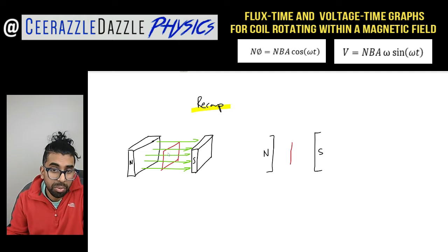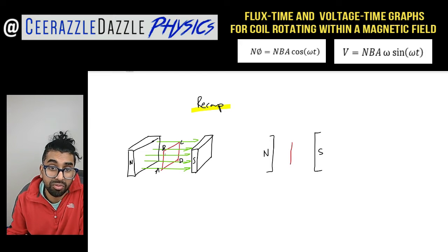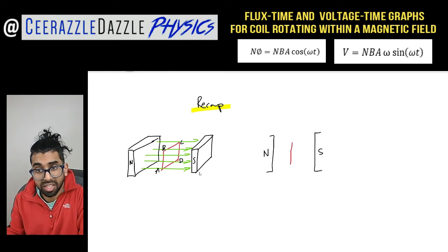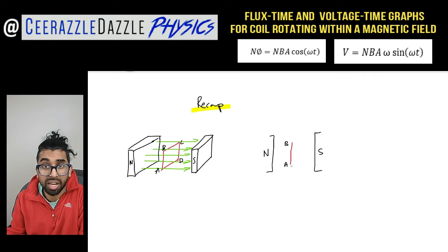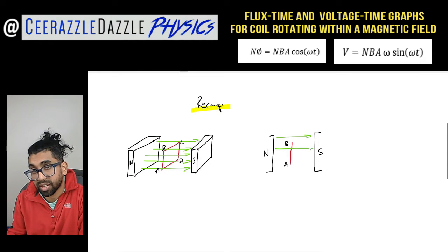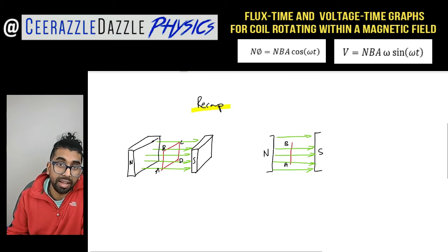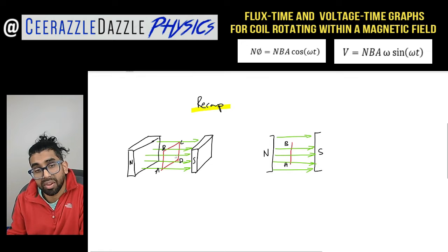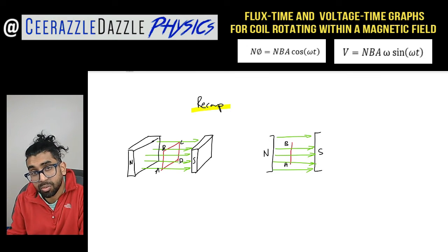Looking at that head-on you wouldn't be able to see it in 3D — you'd just see a line representing this bit. I've labelled different corners of the square coil: on this diagram you'd only see A and B; C and D are behind and not visible because it's not in 3D. The field lines go across right now, and as it rotates we're going to talk about what happens to the flux.